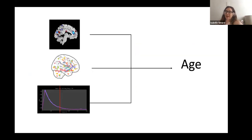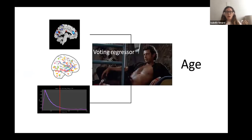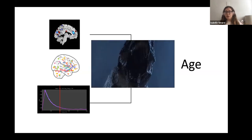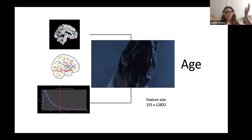The other step was to create a combined model that would predict age using all three resting state modalities together. That was a headache at first. I did a bit of research and came across the voting regressor, but I quickly realized that didn't apply to me because my goal was not to compare different algorithms but to compare the predictive abilities of each modality — I was using the same algorithm. So instead I decided to create what I call my 'mega feature,' where I concatenated all my different features together into one huge matrix to see if combining all the modalities would be more predictive.